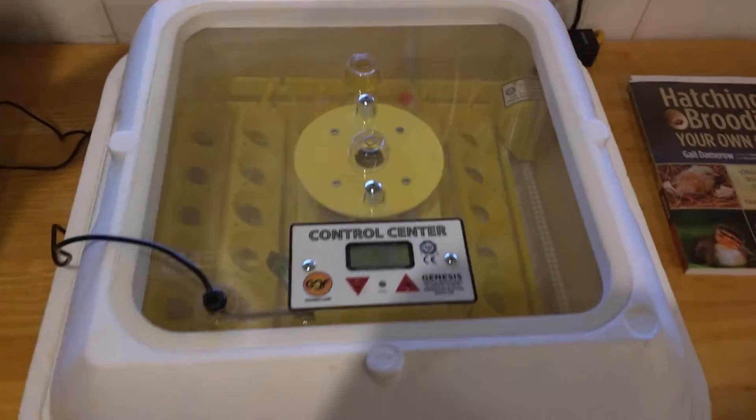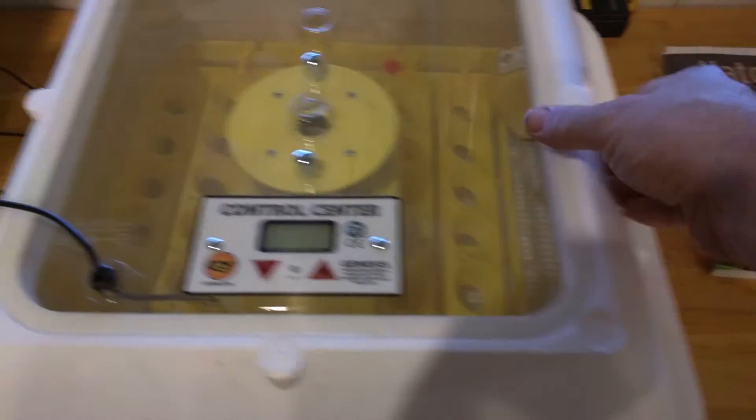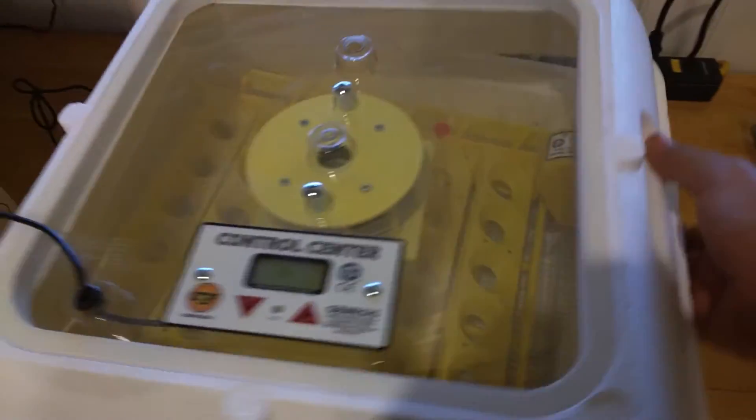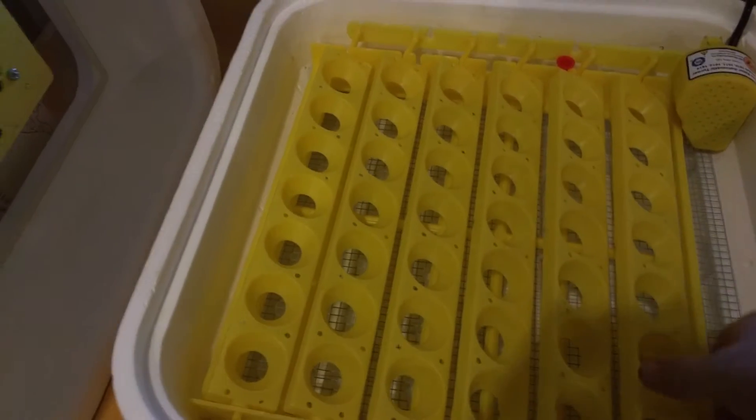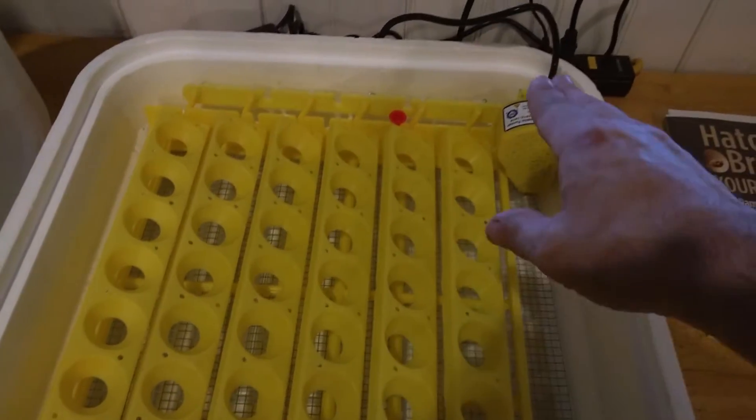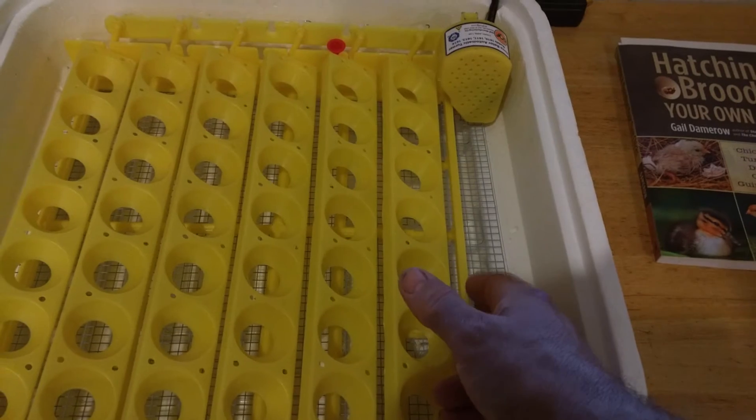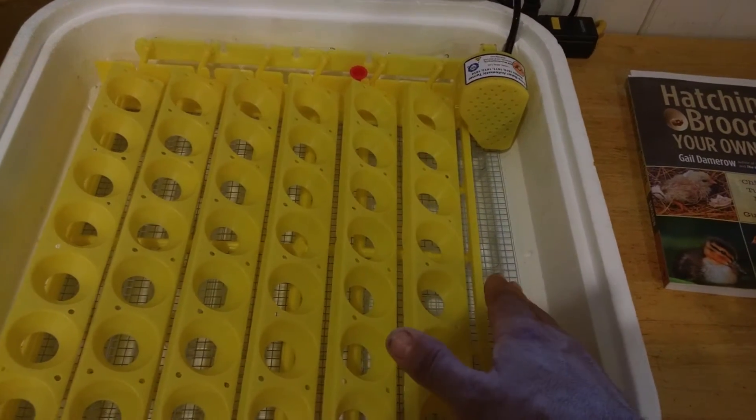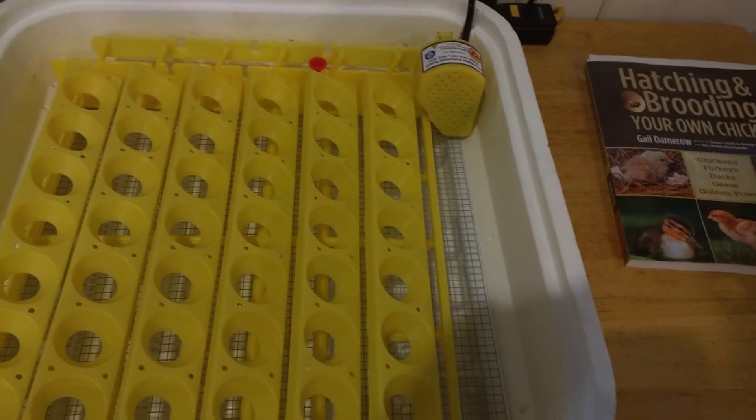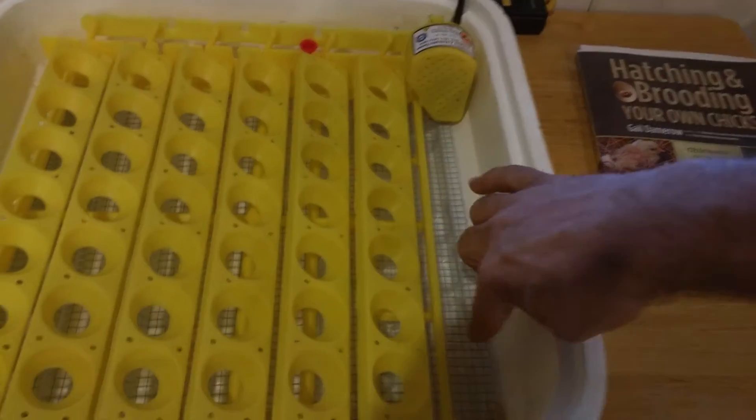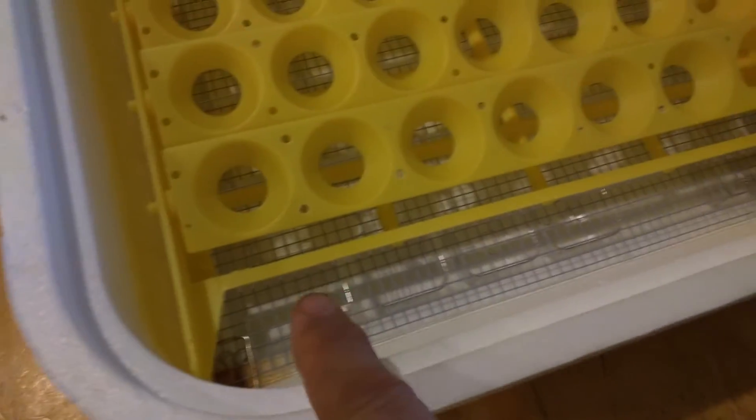But here's basically it. You take this cover off. Here's what the inside looks like. Here's the egg turner plugs in. You got a grate here that you leave down, and in here there's channels. Let me go here under the light. You can see how there's channels.